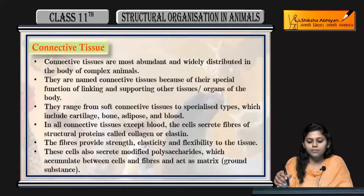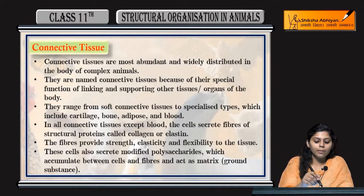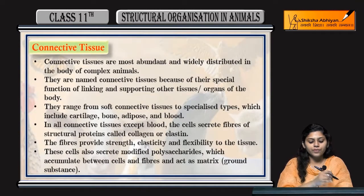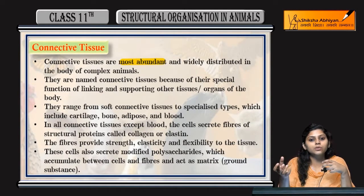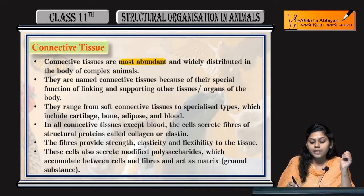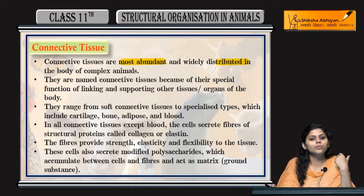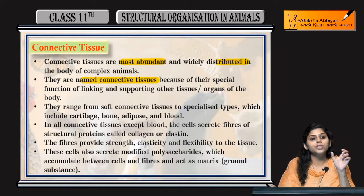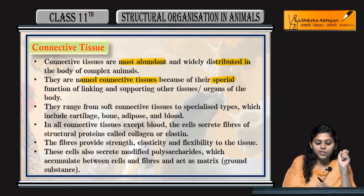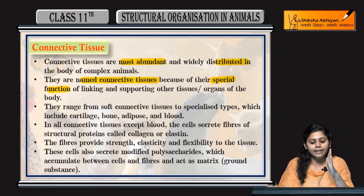We have covered epithelial tissues; now coming to connective tissues. Connective tissues are the most abundant tissues in our body — they are widely distributed in the body of complex animals like human beings. They are named connective tissue because their special function is to link and support other tissues.